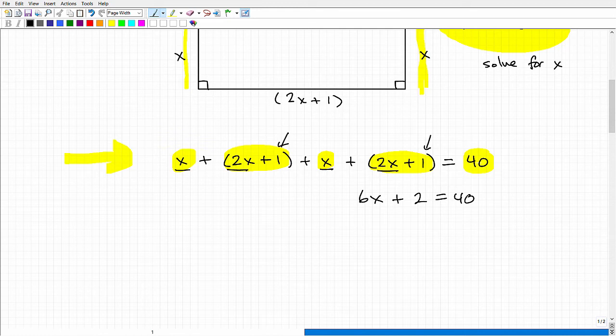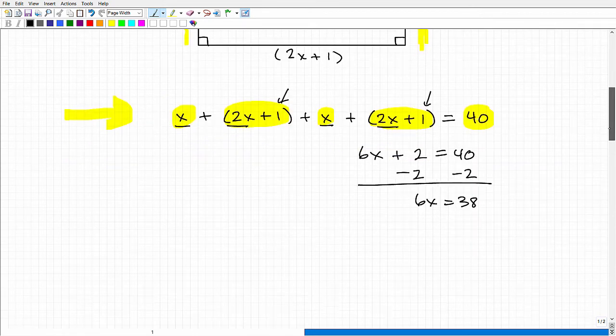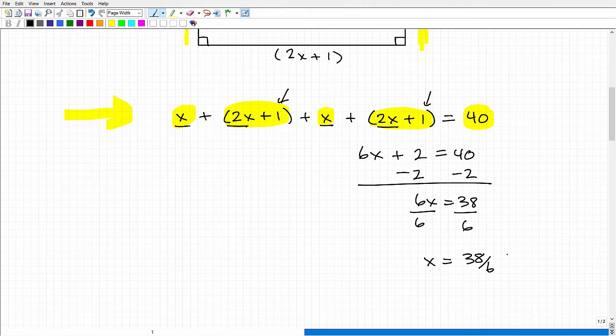Hopefully this is making sense. To solve this equation, we subtract 2 from both sides. Now we have 6x equals 38, and then I divide both sides by 6 and get x equals 38 over 6.